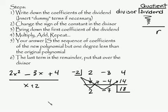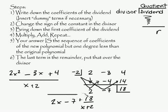So your final answer is going to be 1 degree less. So these are the coefficients of the answer, so it's going to be 2x minus 7 plus 18 over x plus 2. And this would be your final answer.